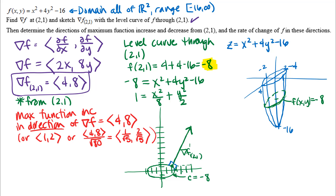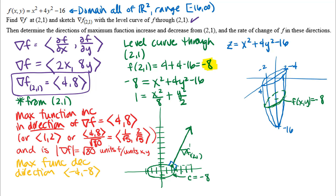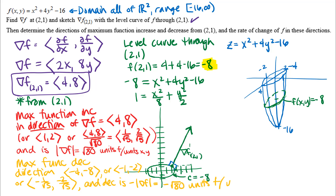The maximum rate of function increase is the magnitude of the gradient vector — square root of 80 units of output per unit of input. The direction of maximum function decrease is exactly opposite the gradient vector: negative 4, negative 8, or any positive scalar multiple of that. The rate of decrease in that direction is negative square root of 80 units of output per unit of x and y.